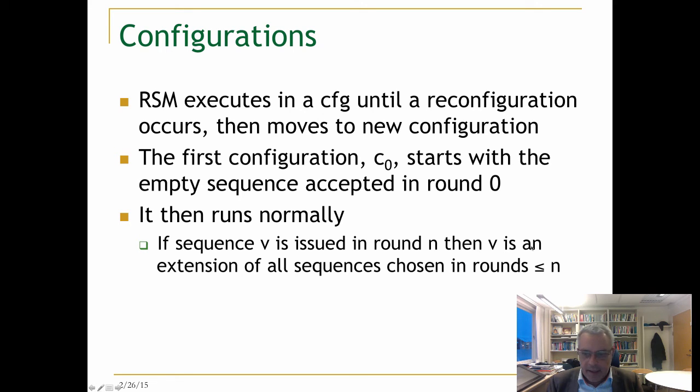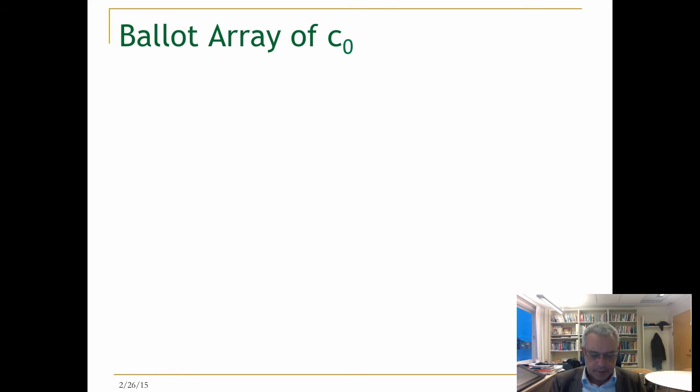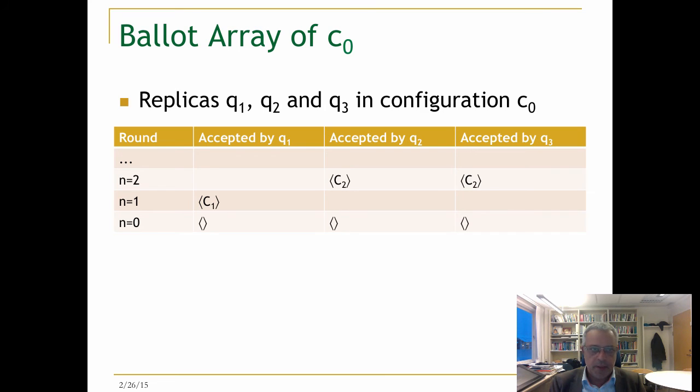We have seen that in sequence Paxos. So we are in a configuration where whenever new commands are issued, the command sequence that is chosen is extended. Let us remember this by the ballot array of c0. Here is a typical ballot array of c0: you have three replicas q1, q2, and q3 in configuration c0. These replicas start with a chosen sequence which is the empty sequence. Here is a possible sequence c1 that is not chosen because at round two you accept another sequence c2.